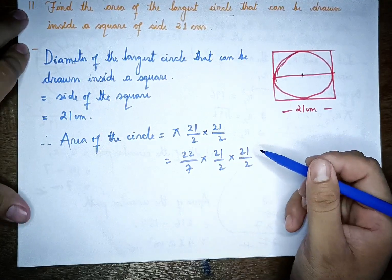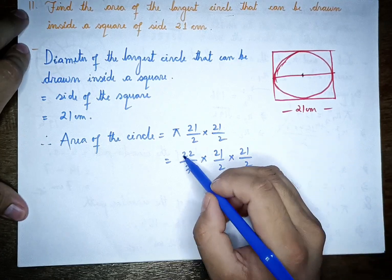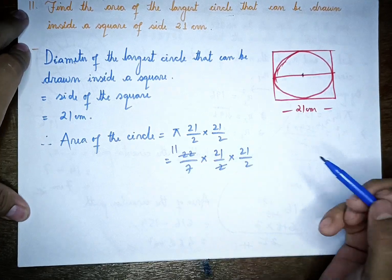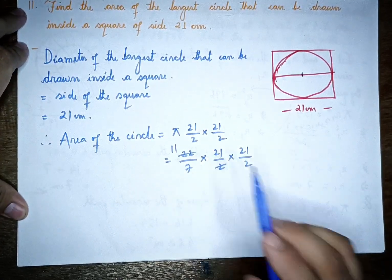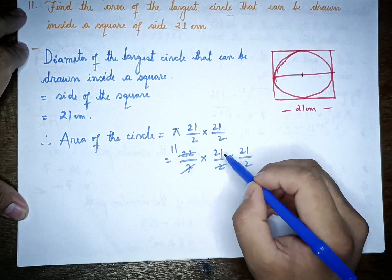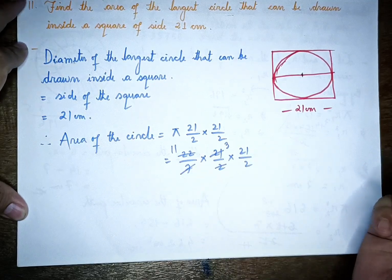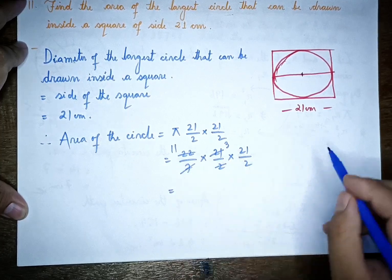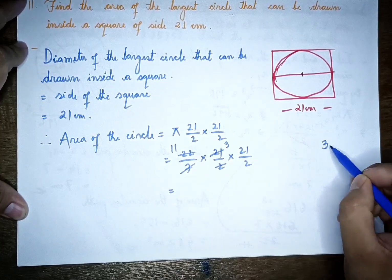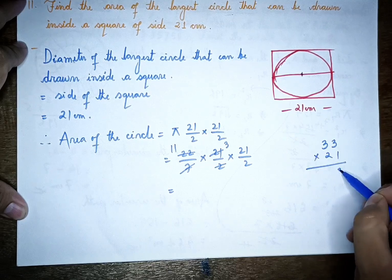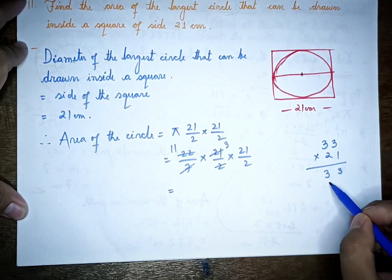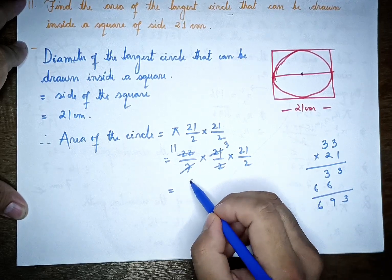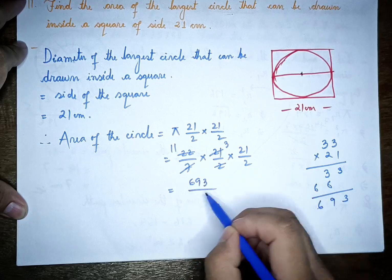Working through the calculation: 22/7 × 21/2 × 21/2. Simplifying: 7 divides into 21 giving 3, so we get 22 × 3/2 × 3/2, which gives 11 × 3 × 3 = 99 × 7 = 693. So we have 693 divided by 2.